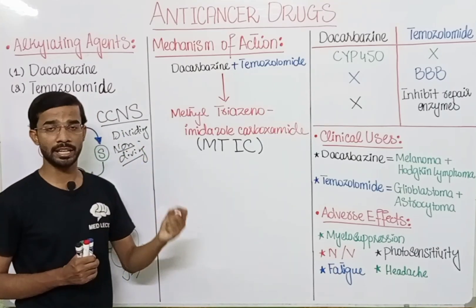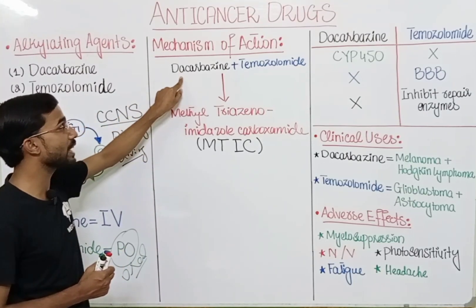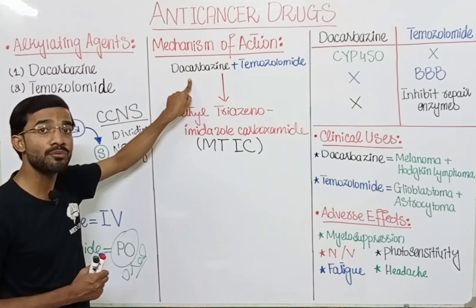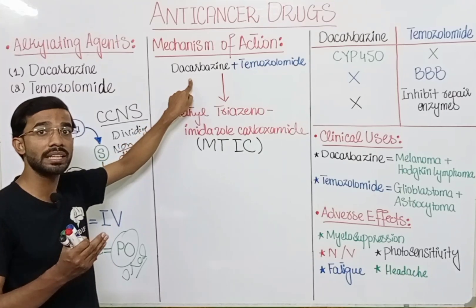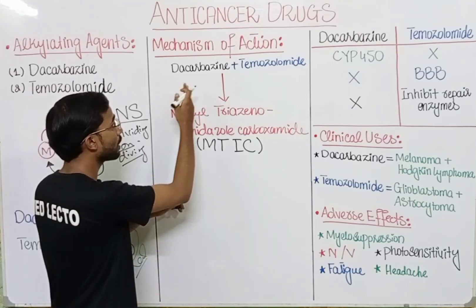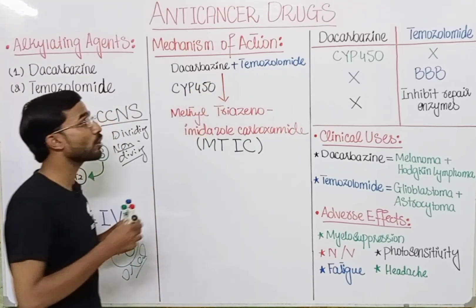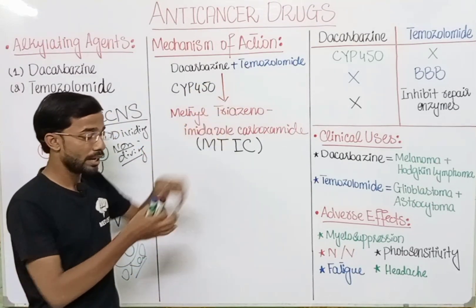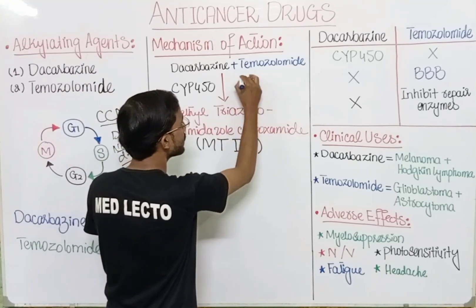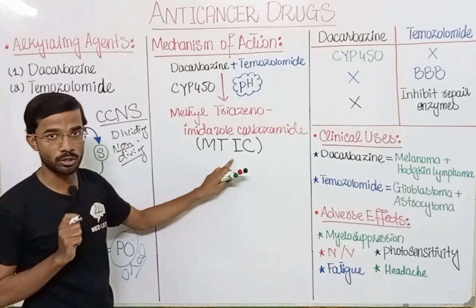An important distinction: the conversion of dacarbazine into MTIC requires cytochrome P450 enzymes present in the liver. In contrast, the conversion of temozolomide into MTIC requires only normal physiological pH — it happens spontaneously at normal body pH.